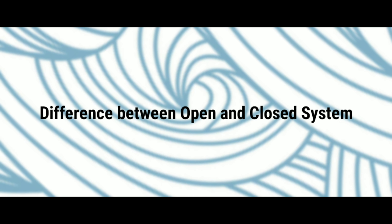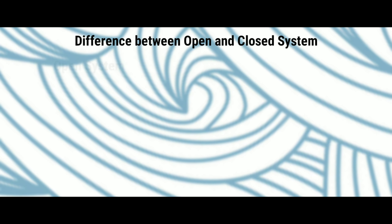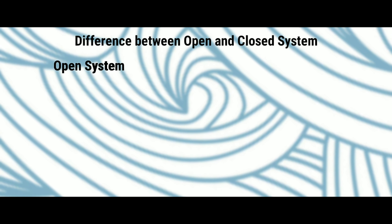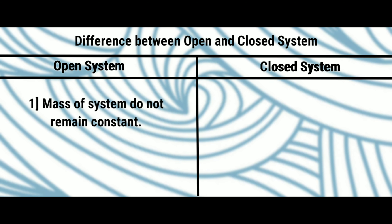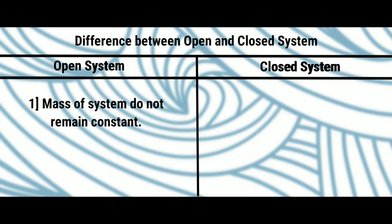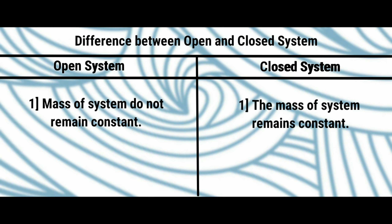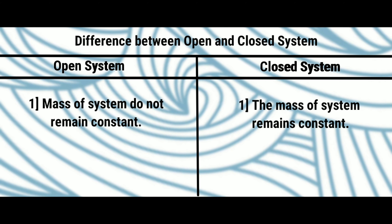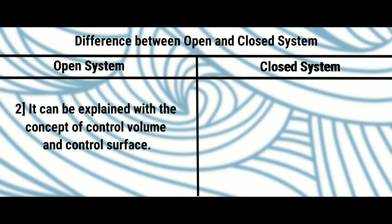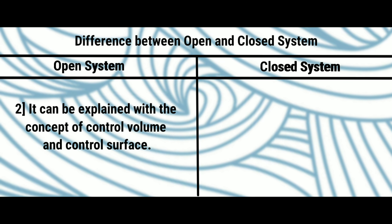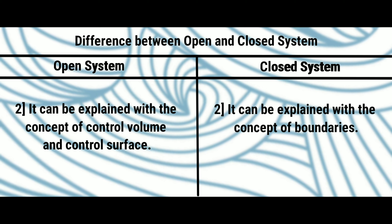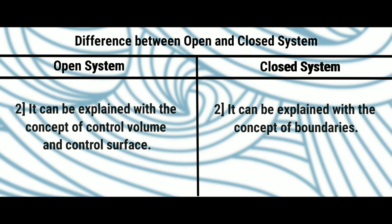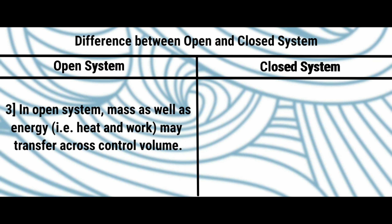Let's get started with the difference between open and closed systems. On the left-hand side we see the open system, and on the right side we see the closed system. First, in an open system, the mass of the system does not remain constant, whereas in a closed system, the mass of the system remains constant. Second, an open system can be explained with the concept of control volume and control surface, but a closed system can be explained with the concept of boundaries.